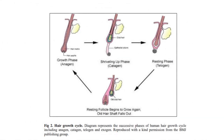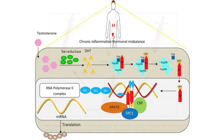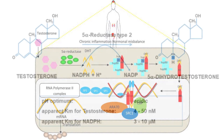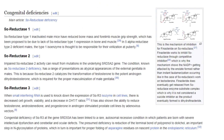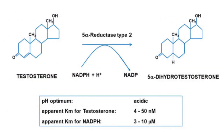The process is as follows: testosterone, the primary male sex hormone circulating in the bloodstream, is converted into DHT by the enzyme 5-alpha reductase. There are three versions of this enzyme, but the bottom line is this enzyme is responsible for converting free testosterone in the body into DHT.